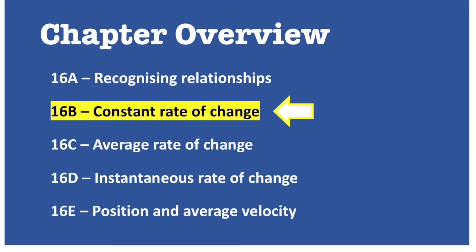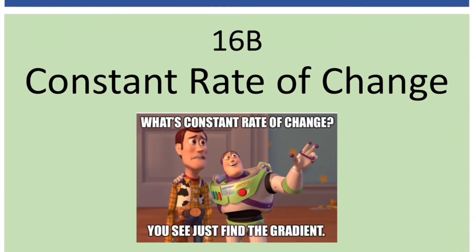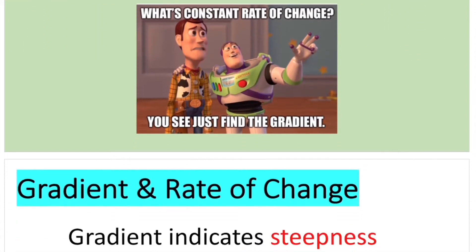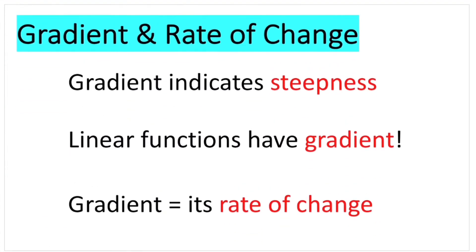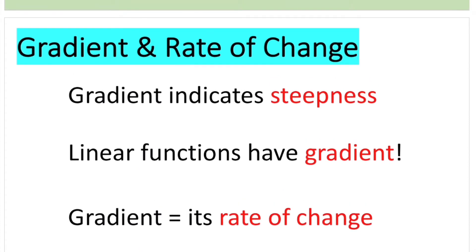In this video, we'll look at 16b: constant rate of change. Constant rate of change is essentially the gradient of a linear graph. So keep this in mind as we go and hopefully it'll make more sense.